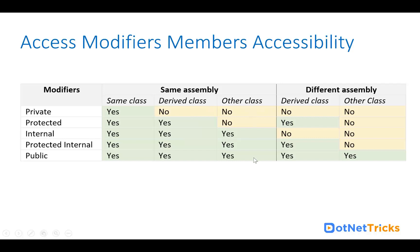In the same assembly, in another class, we cannot access private and protected members — we can only access internal, protected internal, and public. In a different assembly with a derived class that inherits from the base class in assembly one, we cannot access private members, but we can access protected members. Internal is not accessible in a different assembly, but public and protected internal are. In a different assembly's other class, we can only access public members.